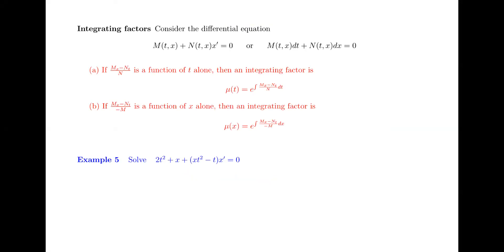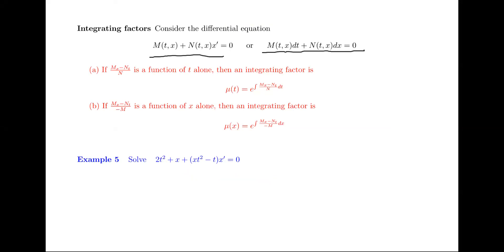If we start with a function of this form, and the partial of m with respect to x minus the partial of n with respect to t, divided by the original function n, is a function of t alone, then we can use this as an integrating factor: e raised to the integral of that expression with respect to t.